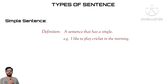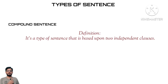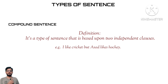Number two is the compound sentence. The word compound in English language means anything that is based upon two or more things, especially anything that is based upon two things. So the very basic meaning of the word compound tells us what type of sentence it is. It is the type of sentence which is based upon two independent clauses. For example, 'I like cricket, but Asad likes hockey.' There are two clauses connected by a coordinator — the conjunction 'but'. Both these clauses are independent and can exist even if we separate them from one another.